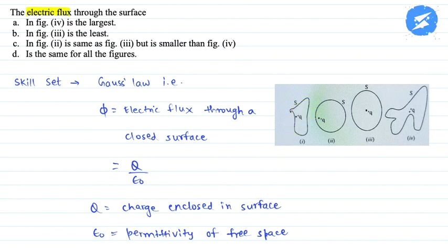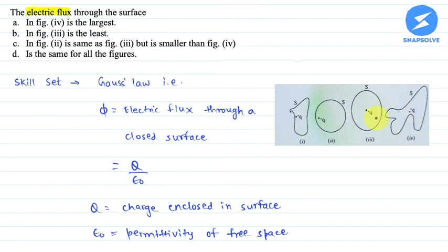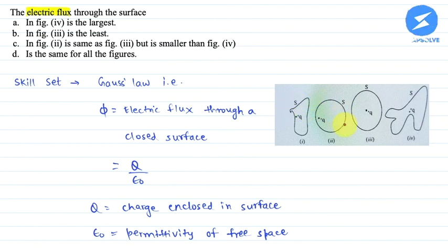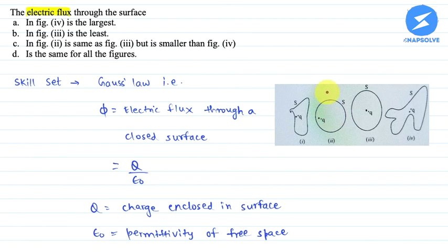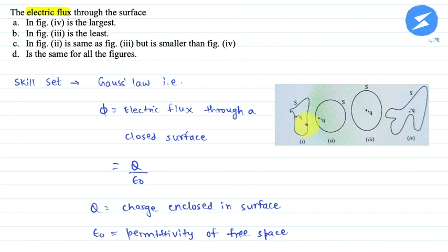So what do we see in the 4 surfaces — 1, 2, 3, and 4? The total enclosed charge within the surface Q is the same. The flux depends on the charge enclosed inside the surface. If the charge is outside the surface it doesn't count, only the charge enclosed inside matters.